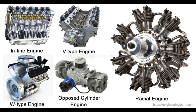In an I-head engine, the inlet and exhaust valves are located in the cylinder head and actuated by a single camshaft; these are mostly used in automobiles. The F-head engine is a combination of I-head and L-head designs, where one valve — usually the inlet valve — is in the head and the exhaust valve lies in the cylinder block, both operated by a single camshaft. In a T-head engine, the inlet valve is on one side and the exhaust valve on the other side of the cylinder, requiring two camshafts to operate.